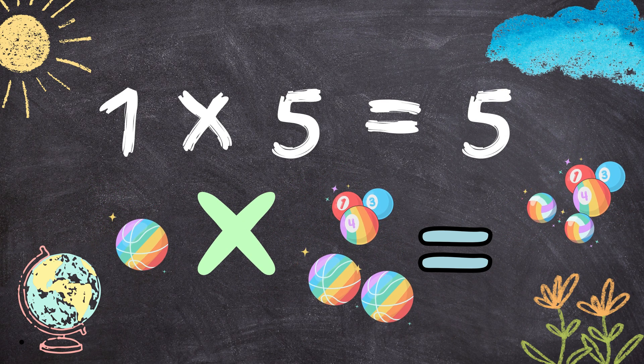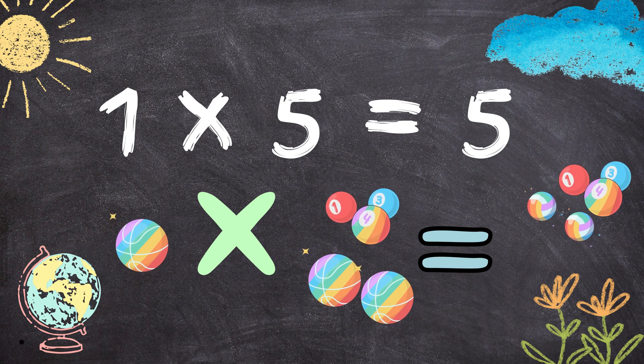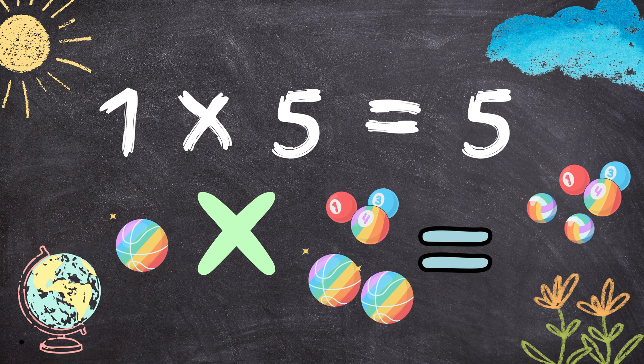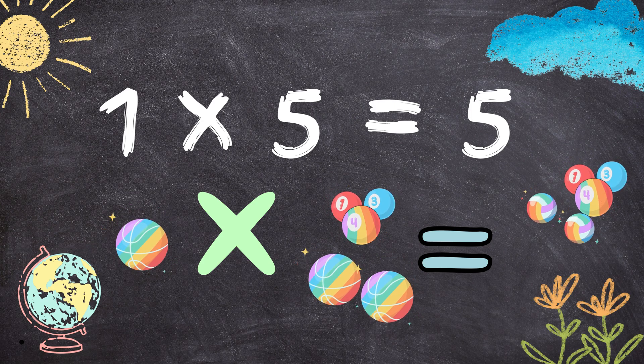1 times 5 equals 5. 1 ball multiplied by 5 balls will equal 5 balls.